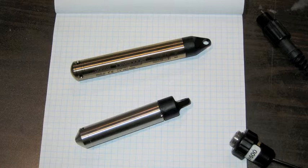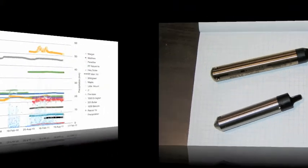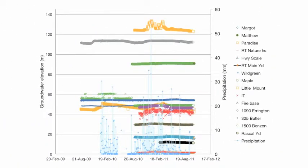Data loggers were installed in 15 wells, eight of them being inactive. Data loggers are small pieces of equipment that were programmed to measure the height of the water column in the well and the groundwater temperature several times per day. We plotted the fluctuation of the elevation of the water table at all the locations monitored with data loggers since July 2009.